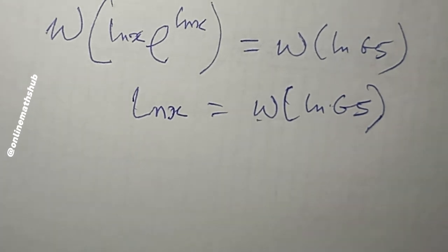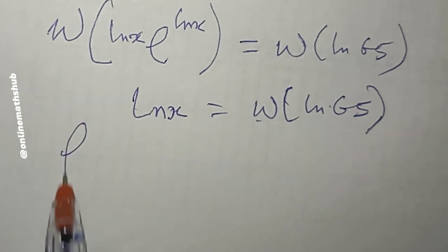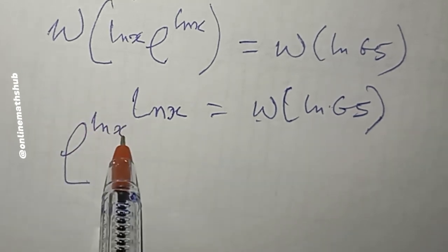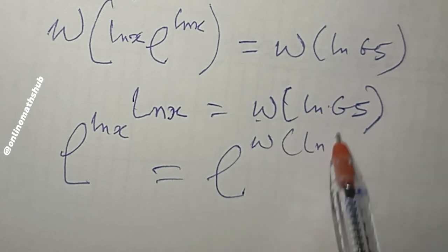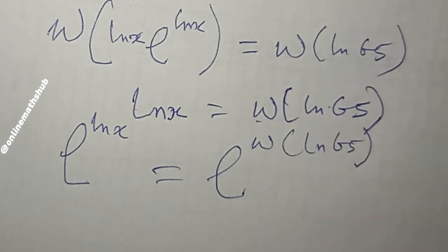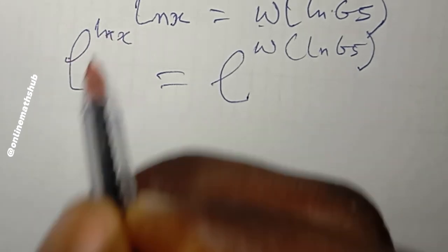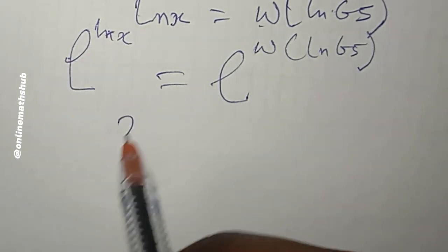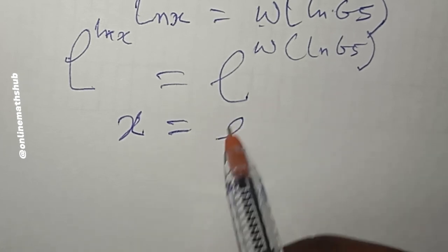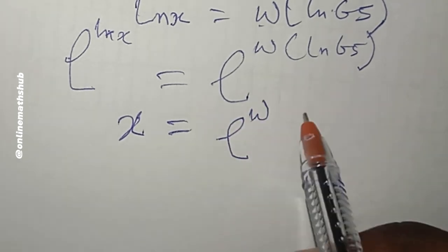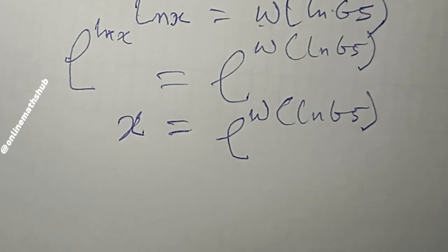Next, I take the exponential of both sides to eliminate the natural log: e^(ln x) = e^(W(ln 65)). Since e^(ln x) = x, the left-hand side simplifies to x, and we get: x = e^(W(ln 65)).